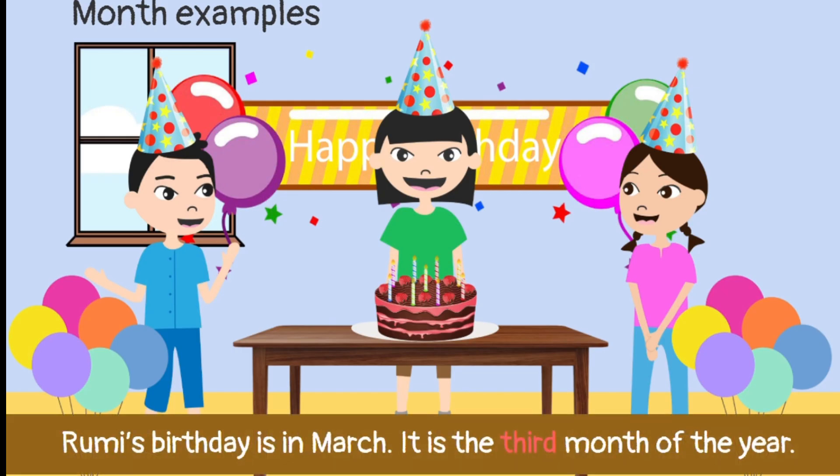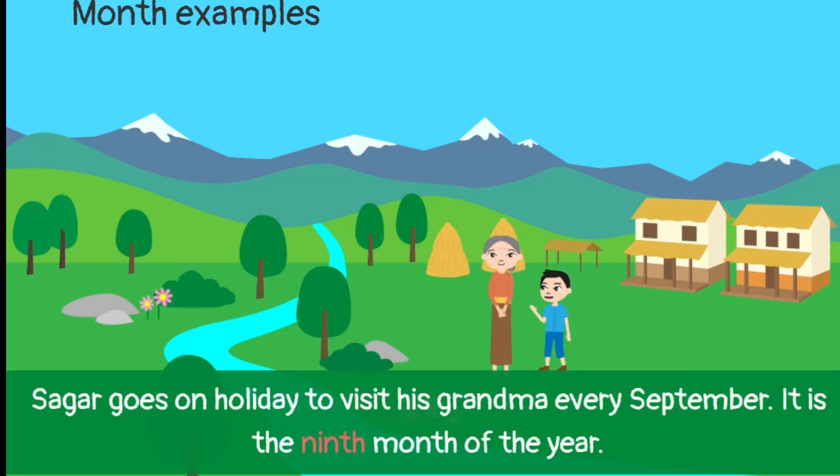Rumi's birthday is in March. It is the third month of the year. Sagar goes on holiday to visit his grandma every September. It is the ninth month of the year.